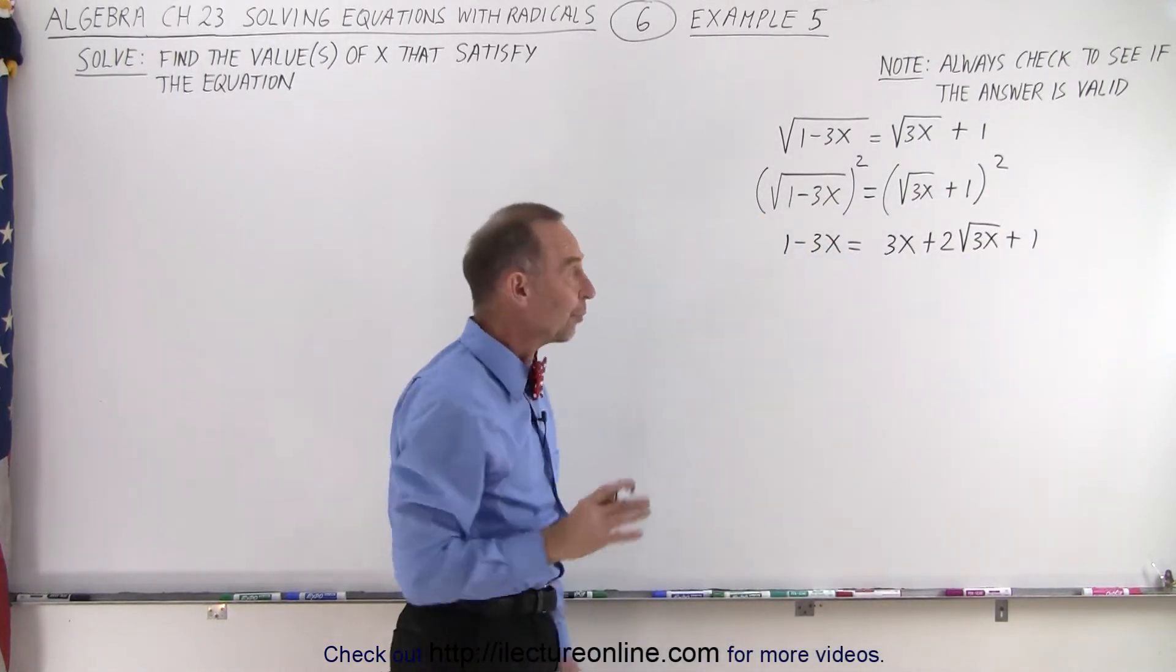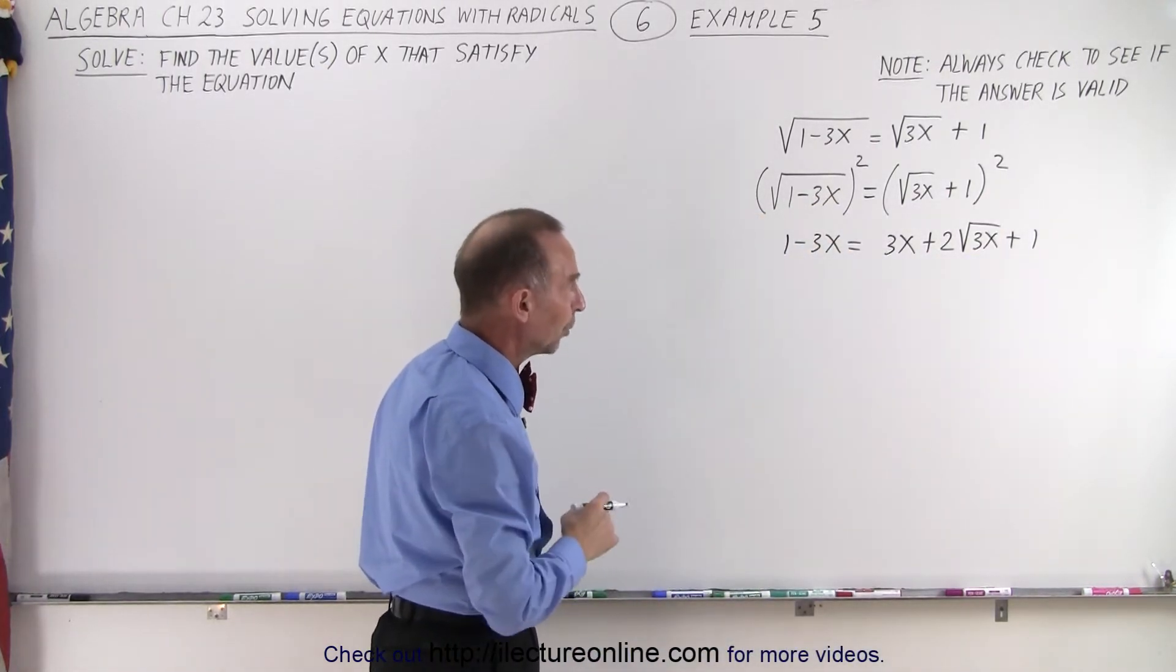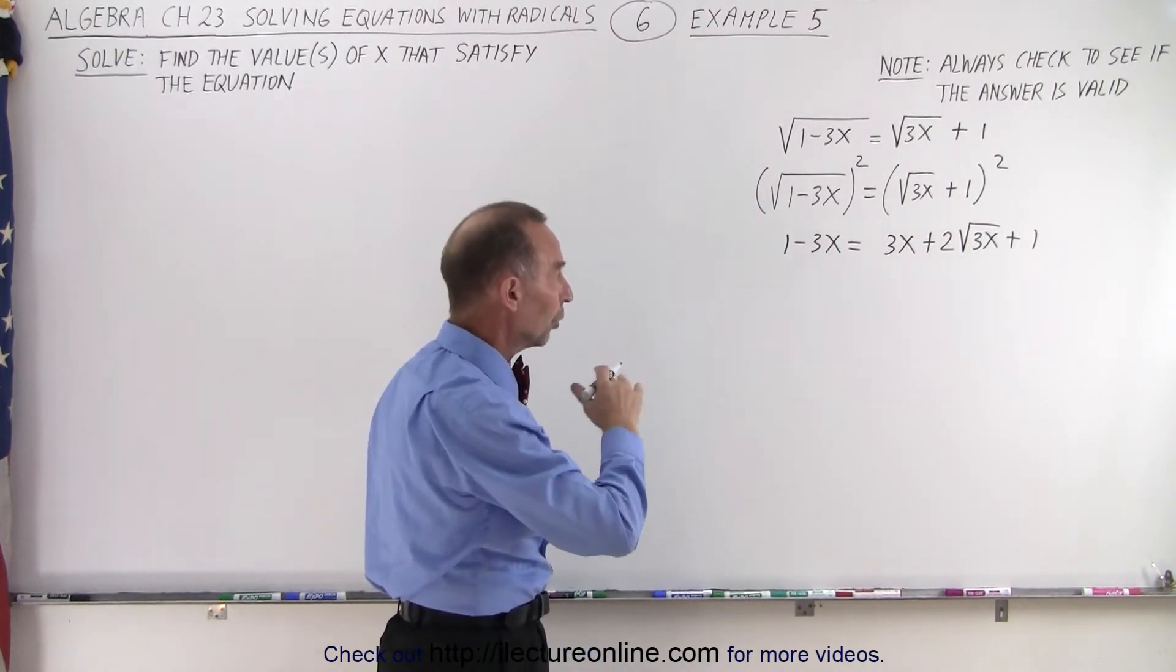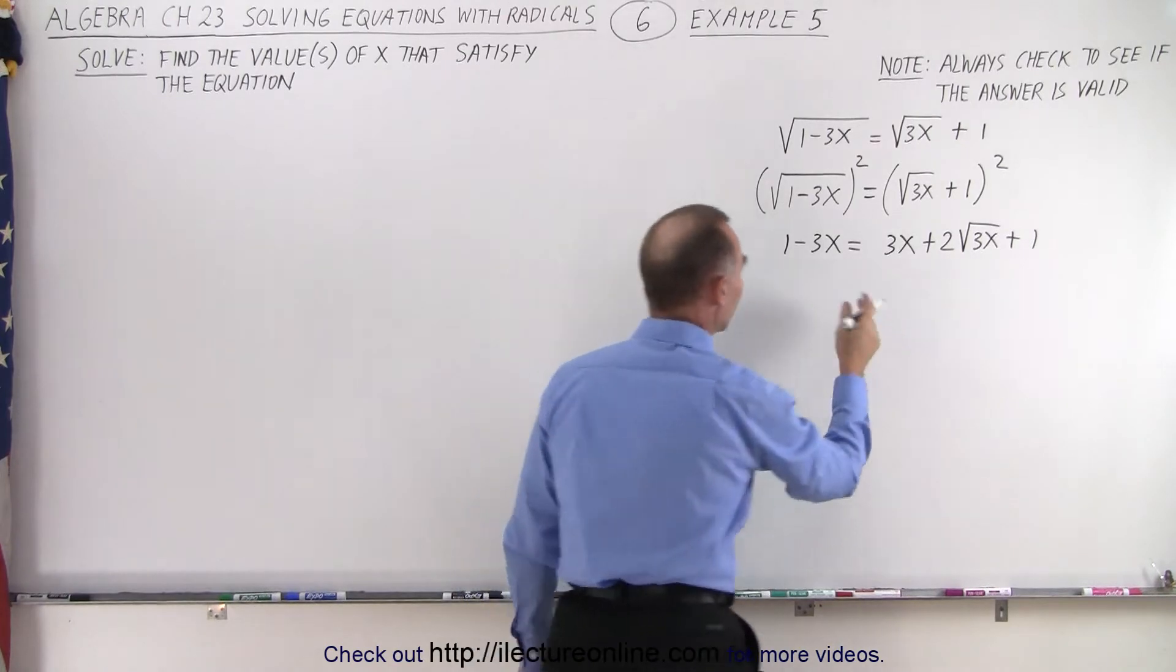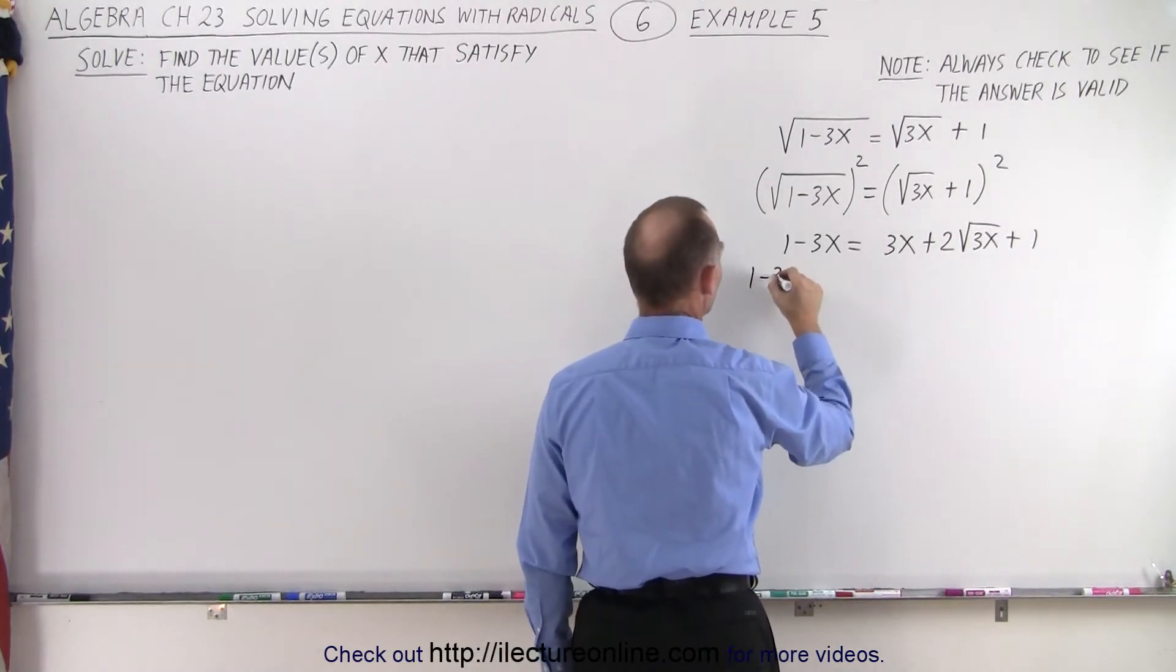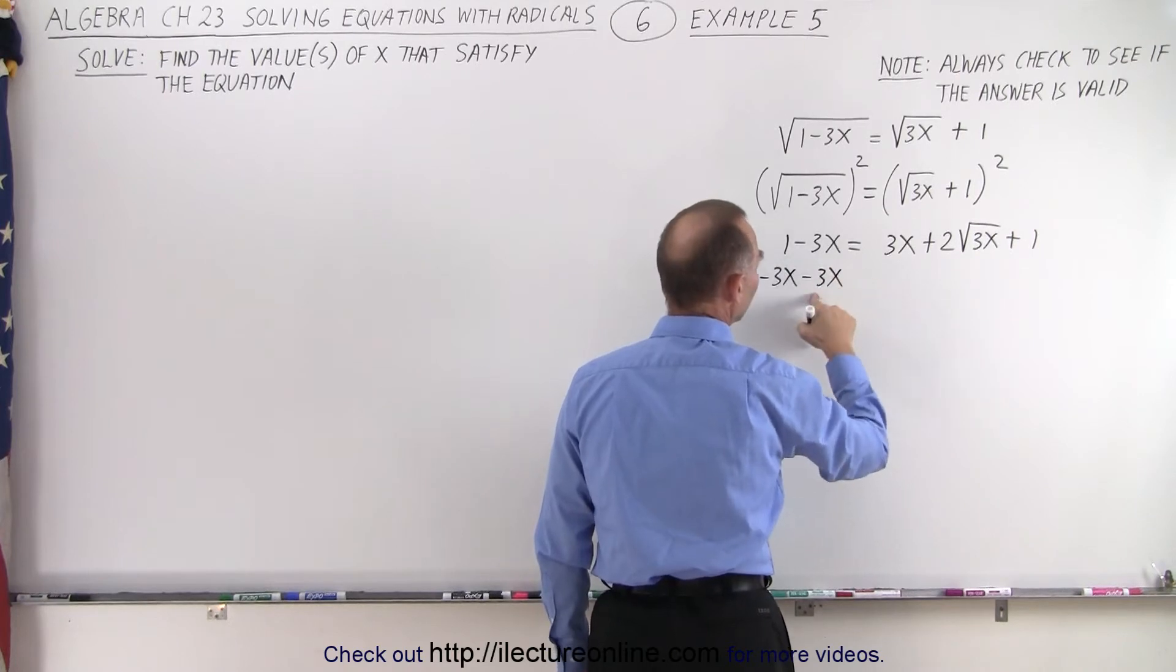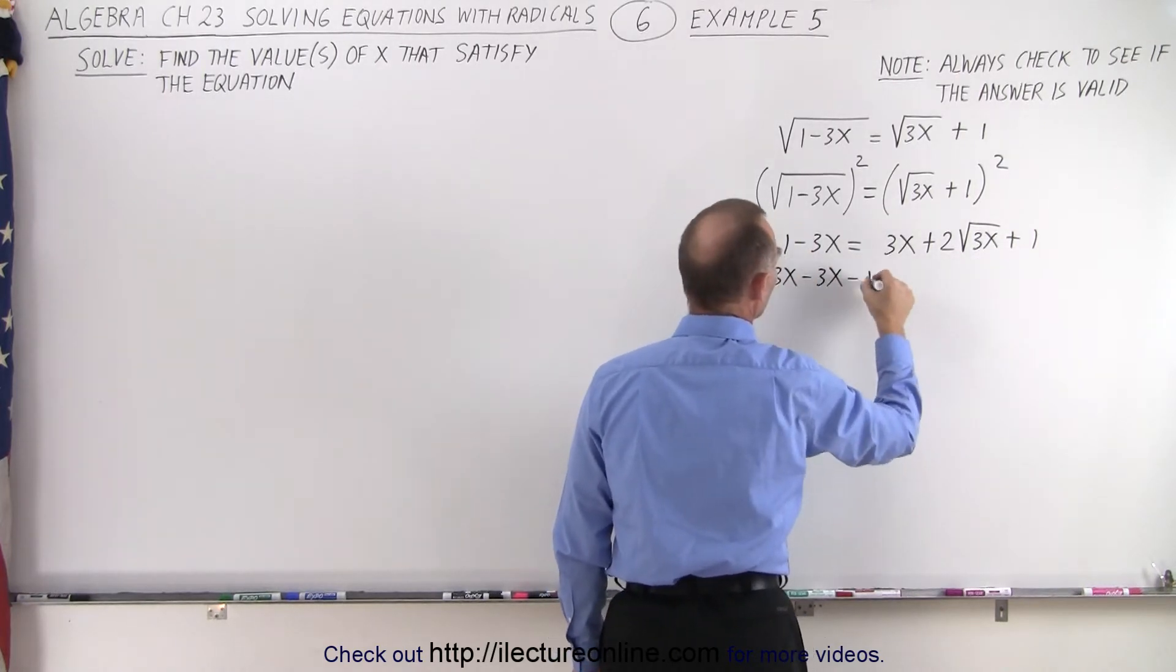And notice we still have a radical after we square both sides, which again means we need to separate the radical from all the terms that don't have a radical. So that means we take 1 minus 3x, and then move the 3x over becomes minus 3x. We move the 1 over becomes minus 1.